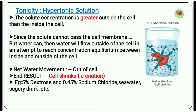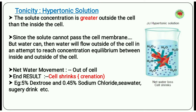Second type: hypertonic solution. 'Hyper' means more, so hyper means the solute concentration is greater outside the cell than inside. As you can see in the beaker, a cell is placed in a solution where the solute concentration outside is more. So water will start to move from inside the cell to outside to maintain equilibrium — water gets pulled out, and because of that the cell will shrink in size.